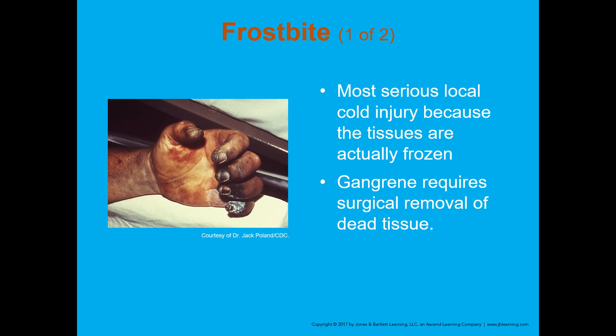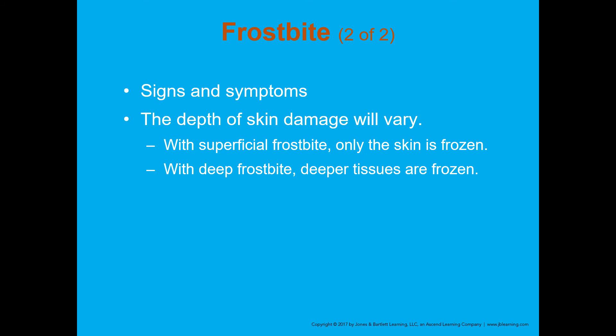Frostbite is the most serious local cold injury because the tissues actually freeze. When tissues freeze, cells die, creating potential for gangrene — dead infected tissue requiring surgical removal. With superficial frostbite, only the skin is frozen; with deep frostbite, deeper tissues are affected, creating more serious damage.